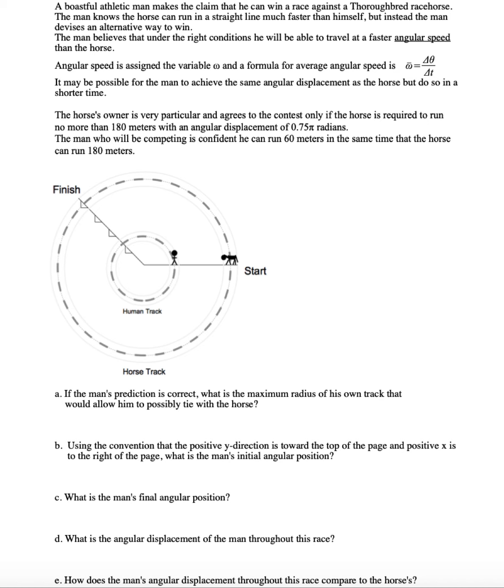Angular speed is assigned to the variable omega, and a formula for it is omega equals delta theta over delta t. It may be possible for the man to achieve the same angular displacement as the horse but do so in a shorter time if the conditions are right. The horse's owner is very particular though and agrees to the contest only if the horse is required to run no more than 180 meters with an angular displacement of 0.75 pi radians. The man who will be competing is confident that he could run 60 meters in the same time that the horse could run 180.